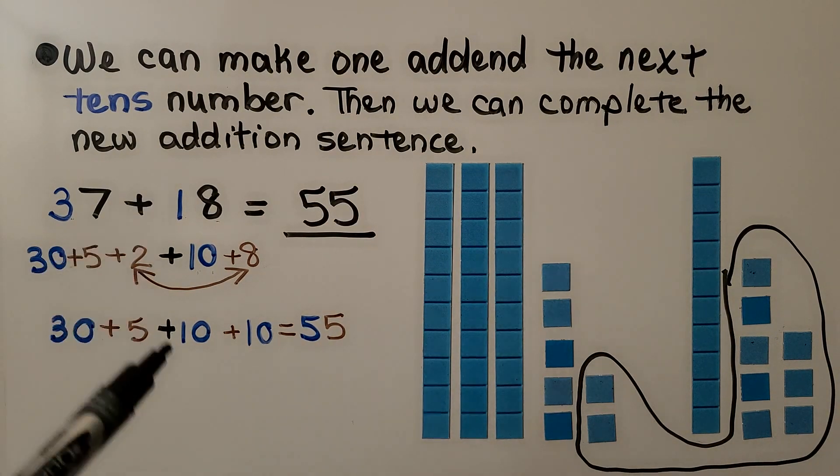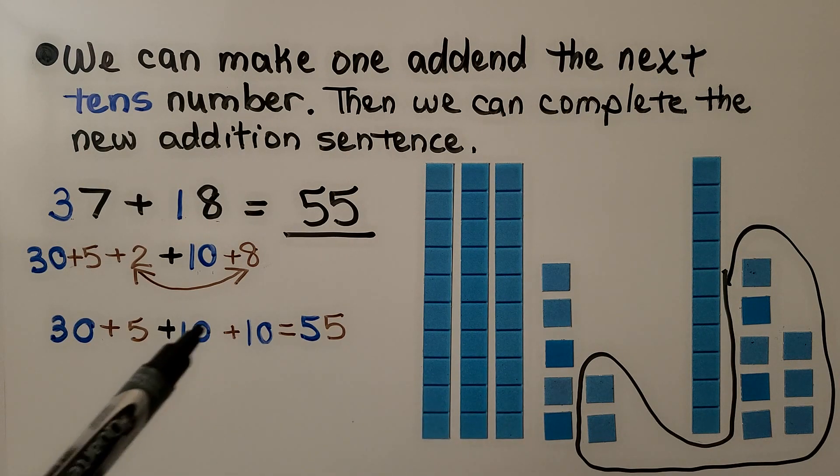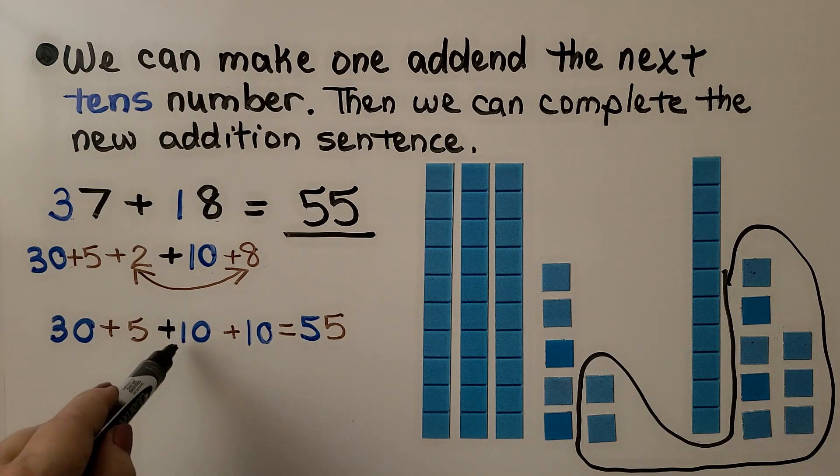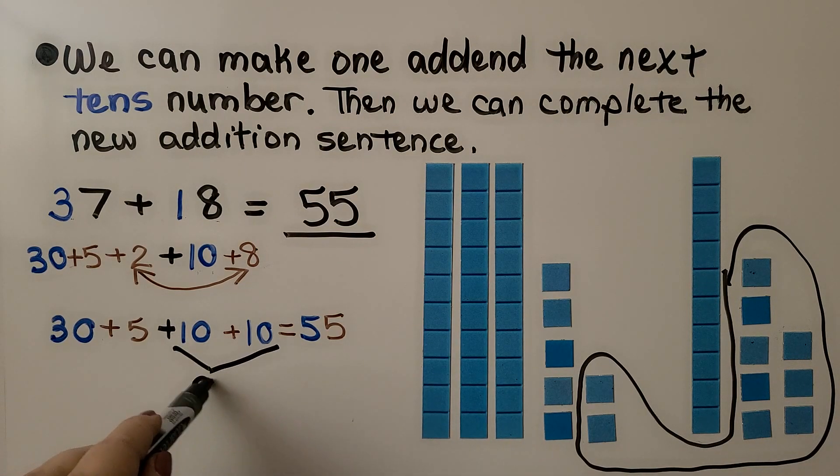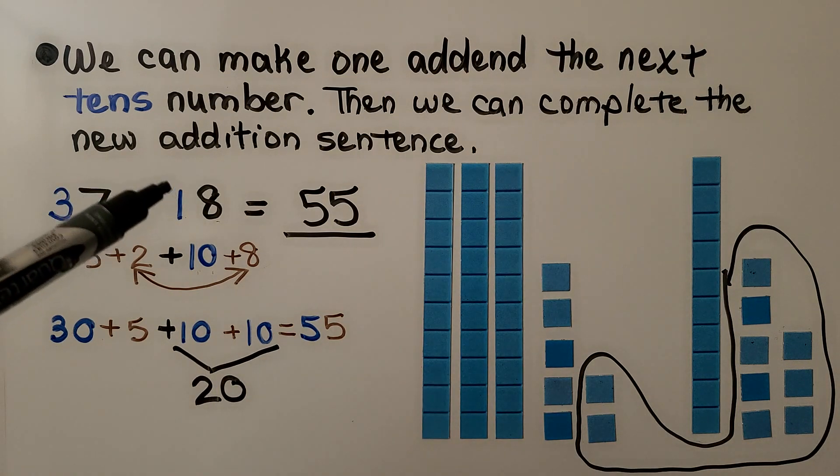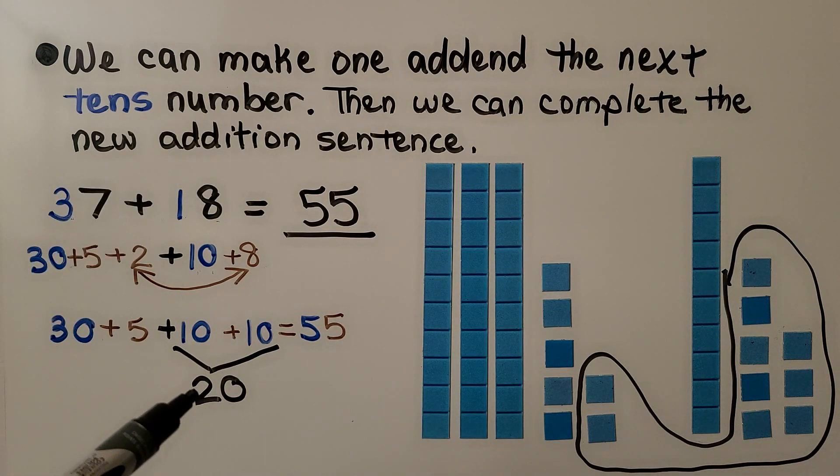We made the 18 into two tens. We made it into the next tens number of 20. It had one ten, eight ones. Now it has two tens, no ones, and it's a tens number.